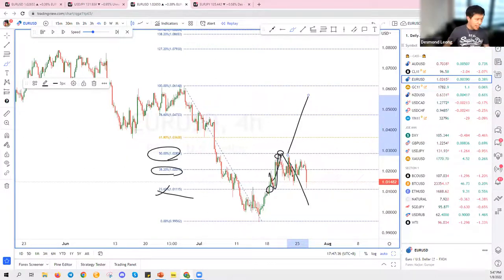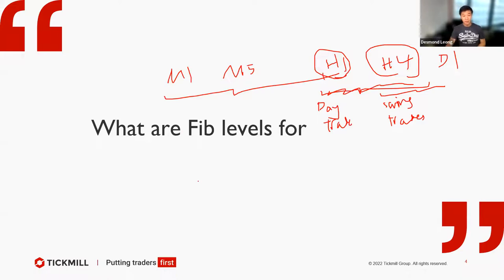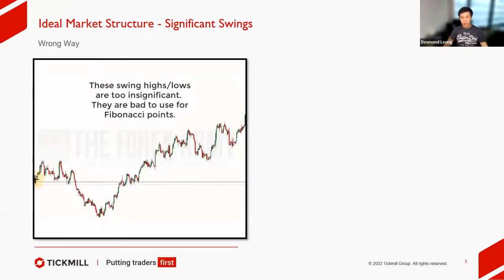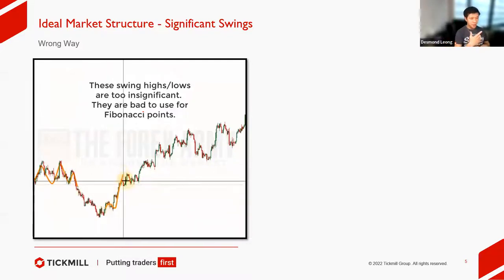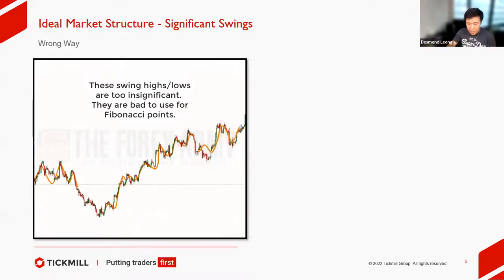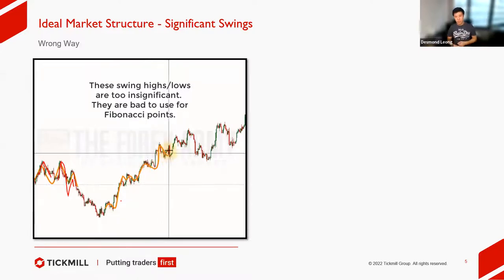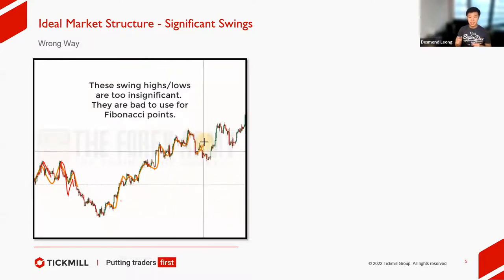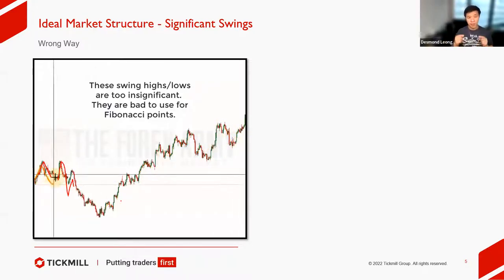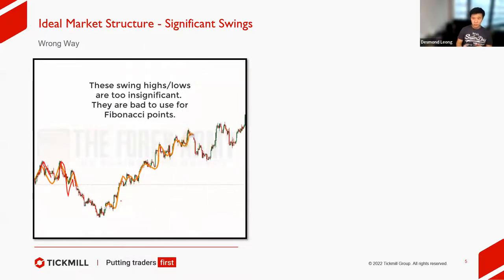Now let's go into the ideal market structure. You know, these are impulse little swings technically, but these are insignificant. The key term we're looking for is 'significant' — how significant is the impulse, how significant is the swing? Because if the swing is not significant enough, it's a bad way to use Fibonacci.